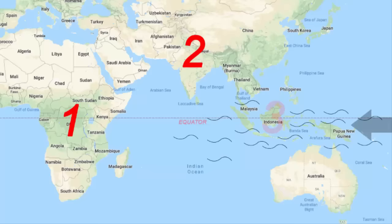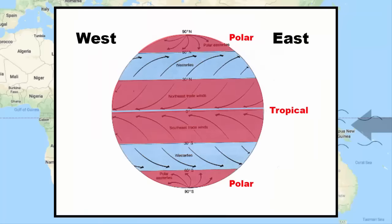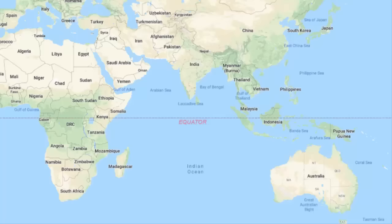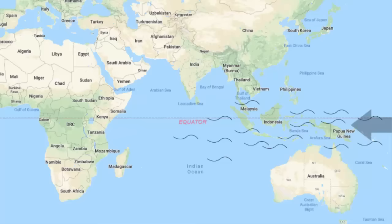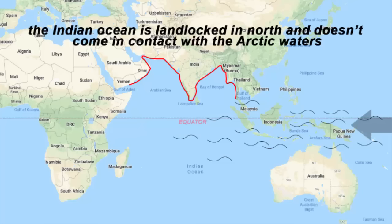On the eastern side, water from the Pacific flows between the islands of Indonesia and Australia and mixes with the Indian Ocean. The tropical easterlies make that happen — these are winds that blow from the northeast in the northern hemisphere and from the southeast in the southern hemisphere, located between 0 and 30 degrees north and south latitude. When this water moves into the Indian Ocean, it changes the surface temperature. Also, in the northern hemisphere, the Indian Ocean is landlocked and doesn't come in contact with the Arctic waters, meaning the Indian Ocean water is warm throughout the year. These are the reasons why the Indian Ocean develops a dipole.